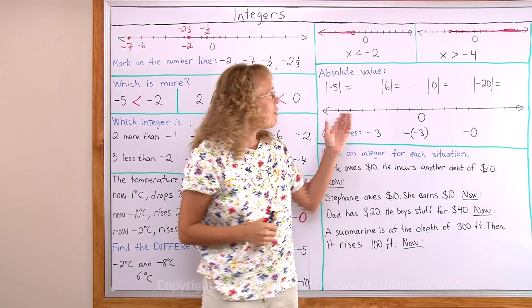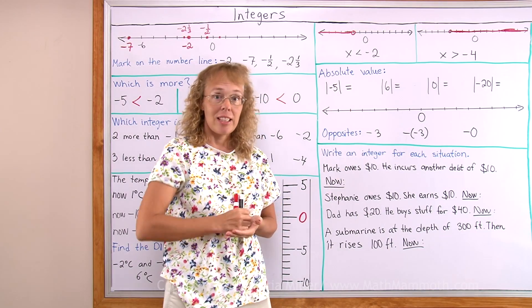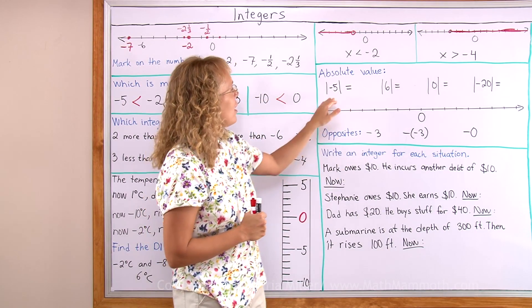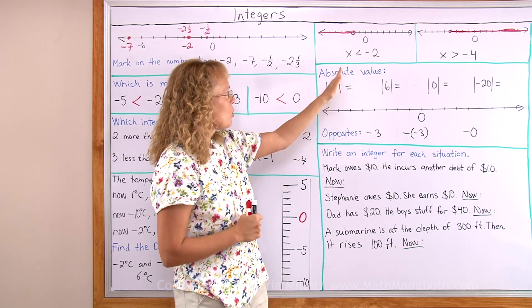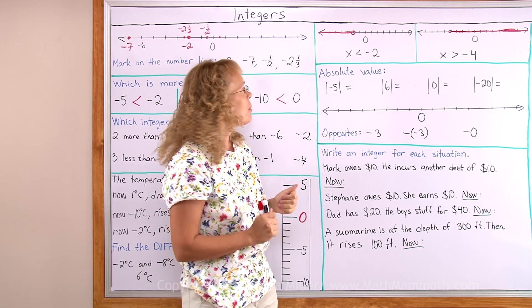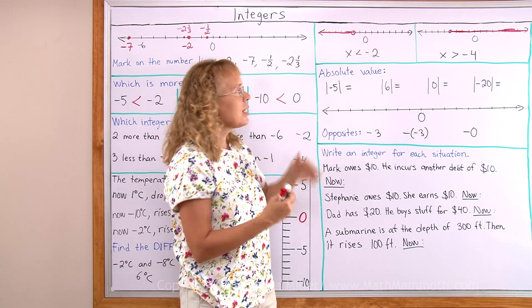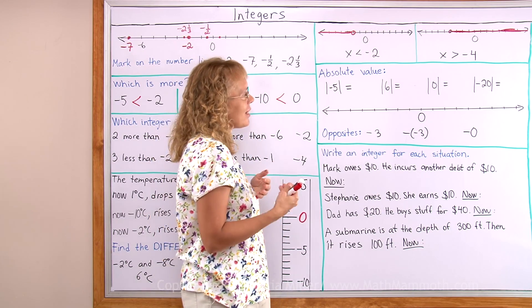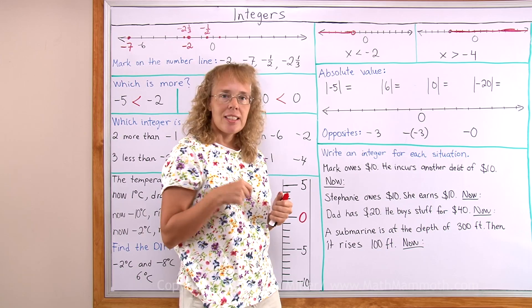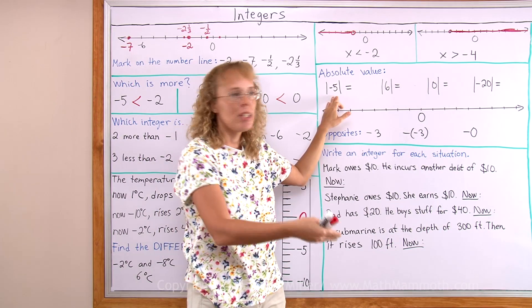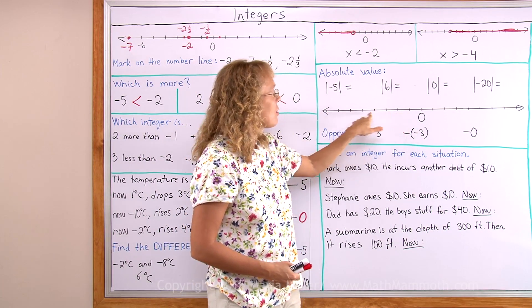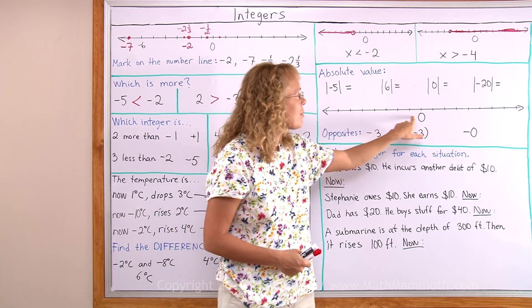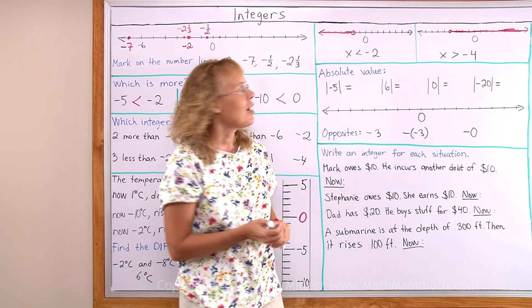Now absolute value is a concept that applies to negative and positive numbers. And it is marked with these two vertical lines around the number. So this I would read it. The absolute value of negative 5. What it means is it is the distance from this number to 0. Negative 5 of course is 5 steps from 0. So its absolute value is 5.